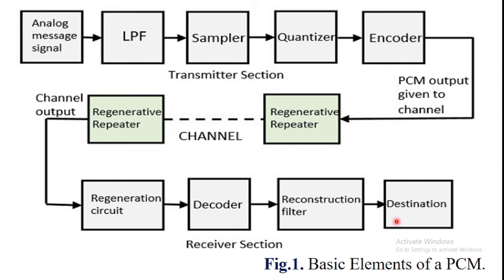The basic operations in the receiver section are: generation of impaired (reduced) signals, decoding, and reconstruction of the quantized pulse train. This block diagram of the PCM system presents the basic elements of both the transmitter and the receiver.